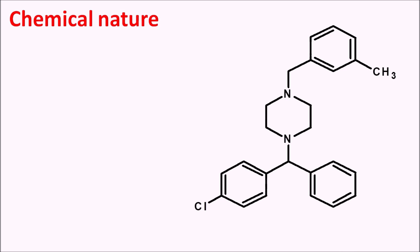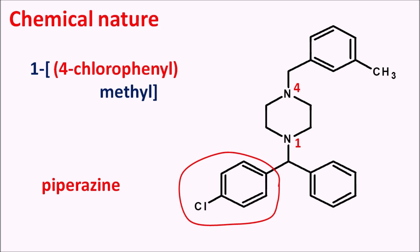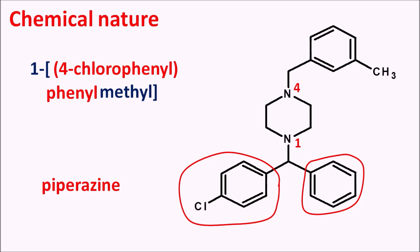First, let us look at the chemical nature of this drug. This is the structure of Meclizine. You can clearly observe the piperazine ring system, so we can write the suffix as piperazine. The first nitrogen and the fourth nitrogen are numbered. To the first nitrogen, a simple methyl group is attached — written as 1-methyl. This methyl group is attached with two phenyl rings: one phenyl ring has a chlorine group at the para position, written as 4-chlorophenyl, and the other is simply a phenyl group.